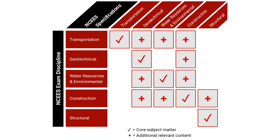You're going to see questions from your chosen discipline, along the diagonal of this table. The way to read it is by rows. If you're taking the transportation discipline, you'll see transportation problems, but you'll also see additional content in geotechnical, water resources and environmental, and construction.